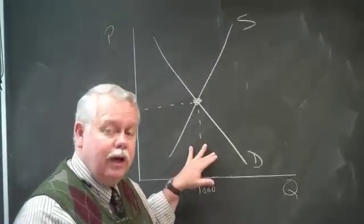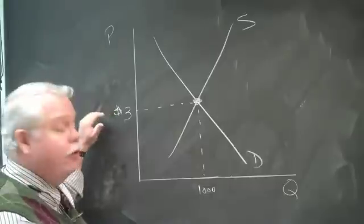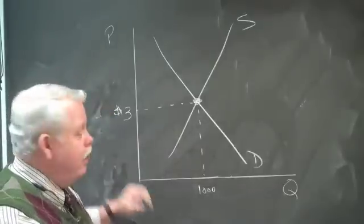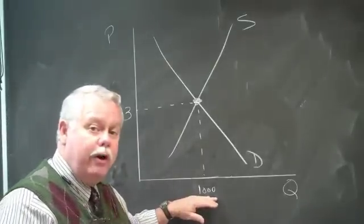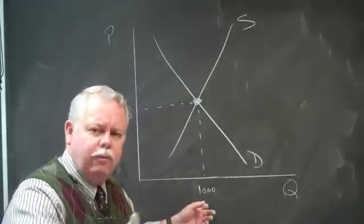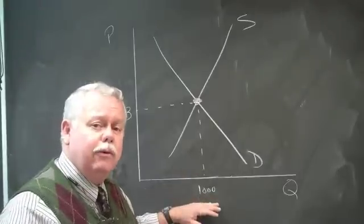Let's say that this is milk. And let's say that milk normally sells for $3 a gallon and as a result the equilibrium quantity in the market, or the average sales per store per day, is 1,000 gallons of milk.